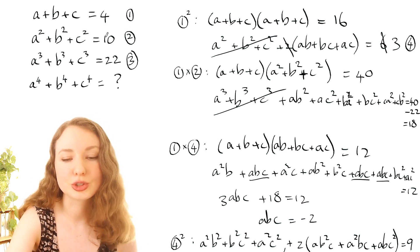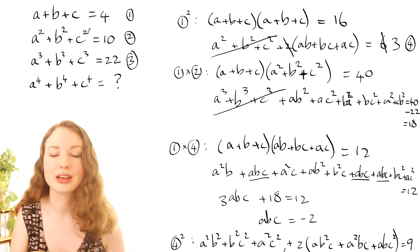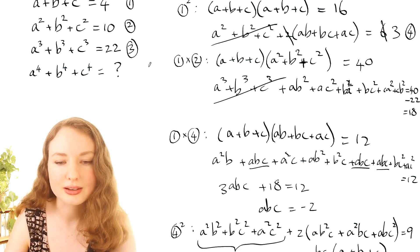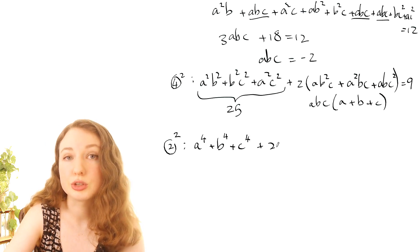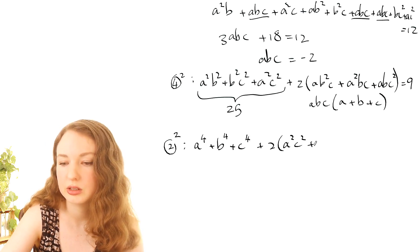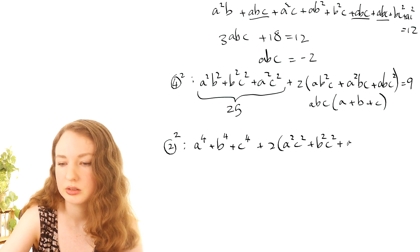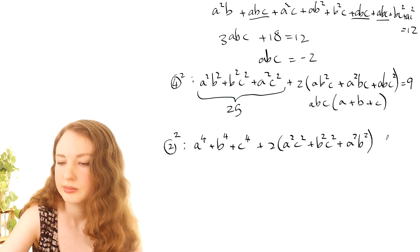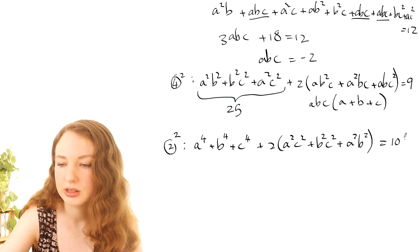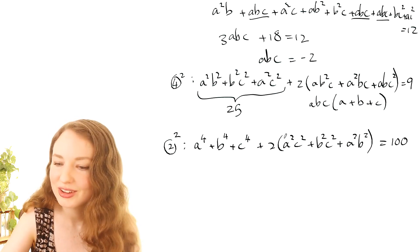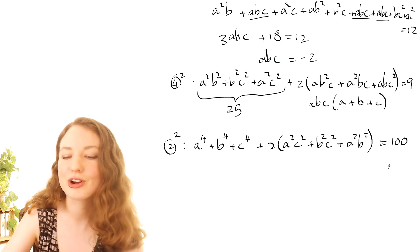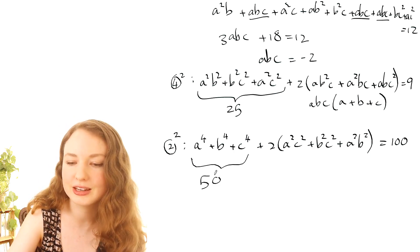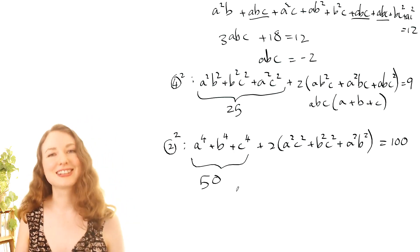We can get a⁴ by squaring equation 2. That gives a⁴+b⁴+c⁴ plus two times the cross-terms (a²c², b²c², and a²b²), and the right side is 10² = 100. We just found that (ab)²+(bc)²+(ac)² = 25, so two times that is 50. Shifting it across: a⁴+b⁴+c⁴ = 100 − 50 = 50. So 50 is the answer.